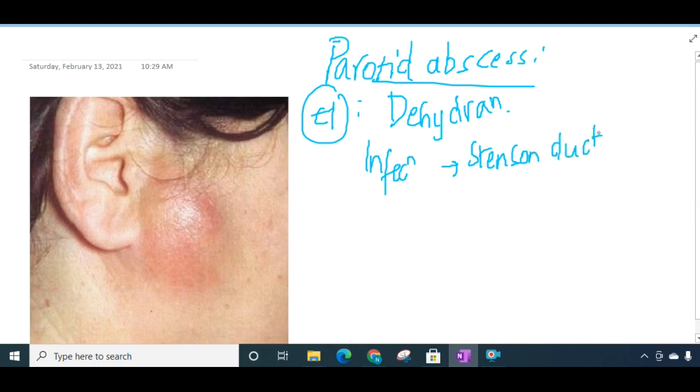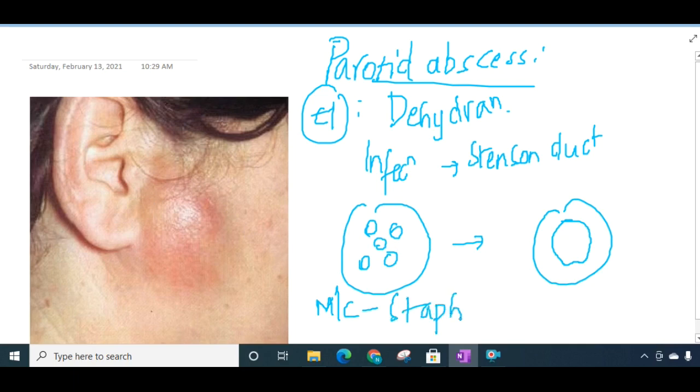Sometimes multiple small abscesses may form in the parotid gland which will coalesce to form one large abscess. The most common organism causing parotid abscess is Staphylococcus aureus, but sometimes Streptococcus, anaerobic organisms, and other gram-negative organisms have also been cultured.